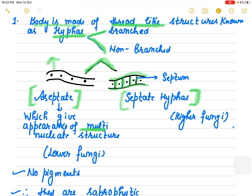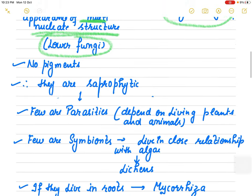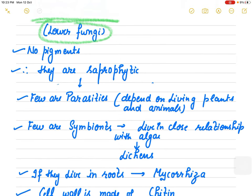This aseptate feature of fungi is observed in the lower groups of fungi and septate septum is observed in the higher fungi members.